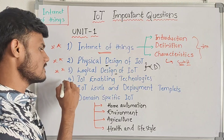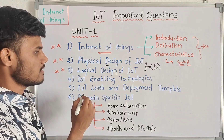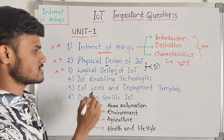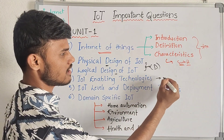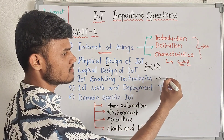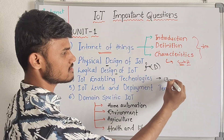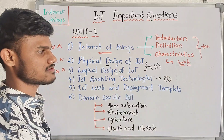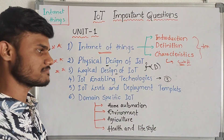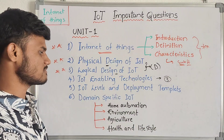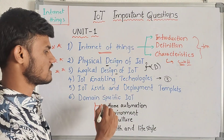Next is IoT enabling technologies. In IoT enabling technologies, we have three types of technologies. That is explained — that is the question.